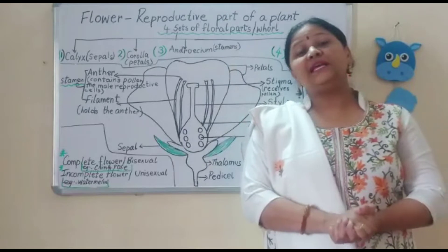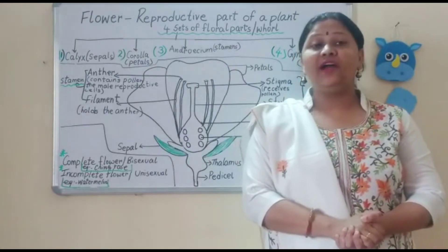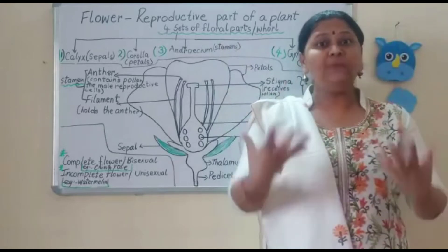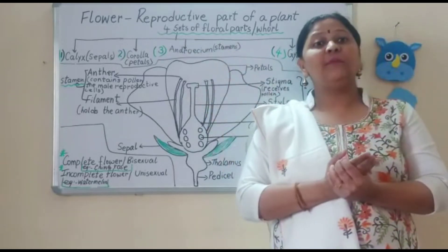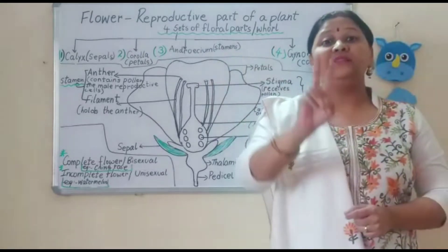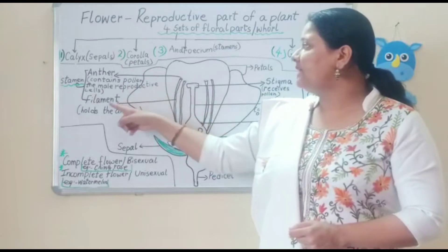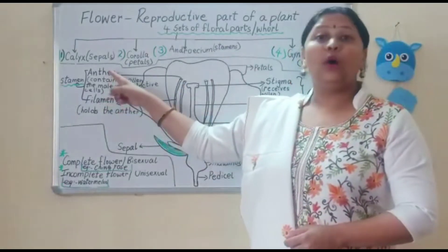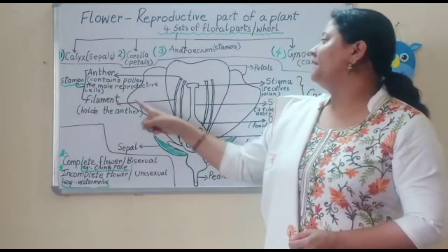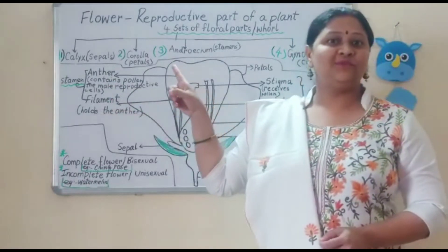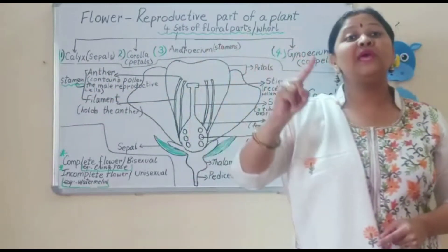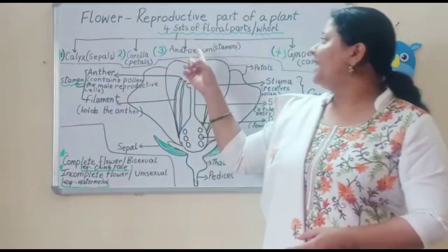Now coming to stamen. Stamen is the male part of the flower. To remember it, the word stamen itself has 'men' — it means the male part. All the stamens combined are known as androecium. Stamen comprises of two parts: the upper lobe is the anther, and the lower part is the filament. Anther contains pollen, the male reproductive cells. Anther plus filament makes stamen, and all stamens together are known as androecium.